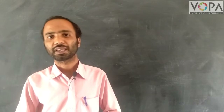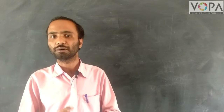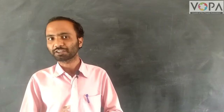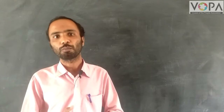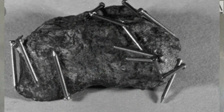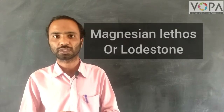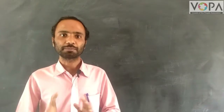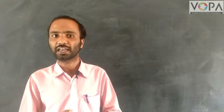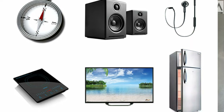In the previous standard you had learned about the magnet. This magnet was discovered in a Greek country in the form of a stone. That stone is called the Magnesian stone or Magnesian Lithos. It is also called Lodestone. We use this magnet in our daily life in different instruments like speakers, television, and home theaters.